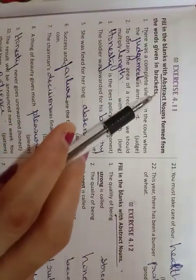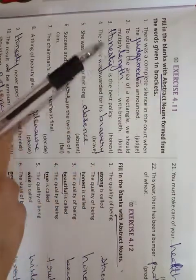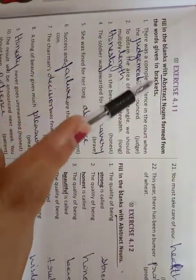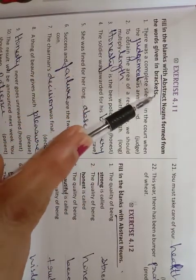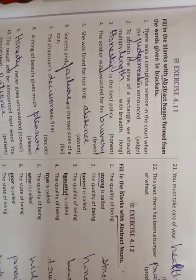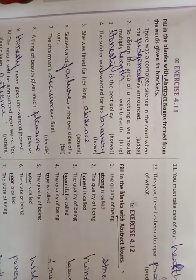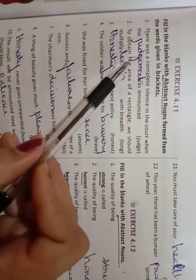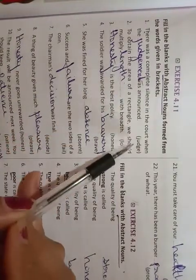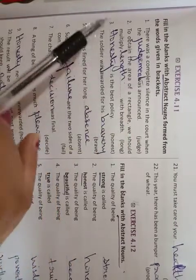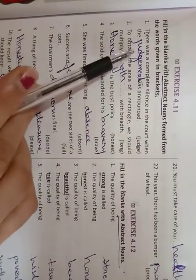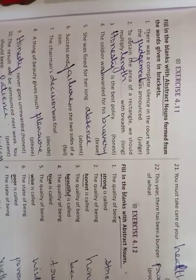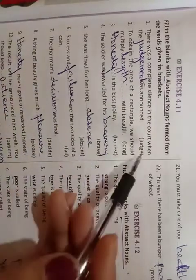Exercise 4.11: fill in the blanks with the abstract noun. The base word is given — you have to change it into an abstract noun. For example, if the word is 'judge', change it to 'judgment'. You can see a judge, but you cannot see judgment — you can only feel it.